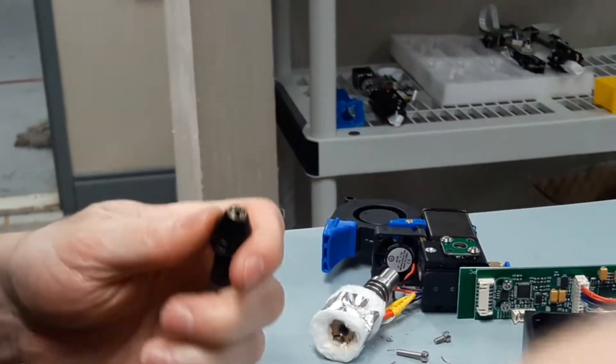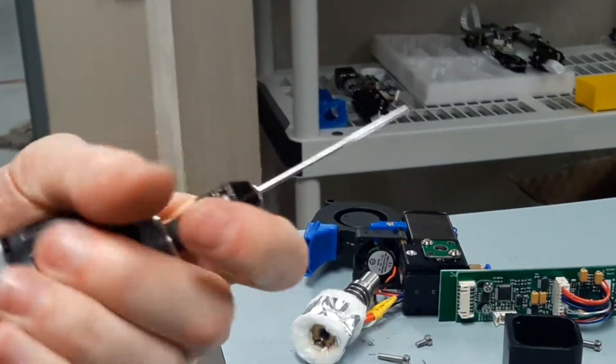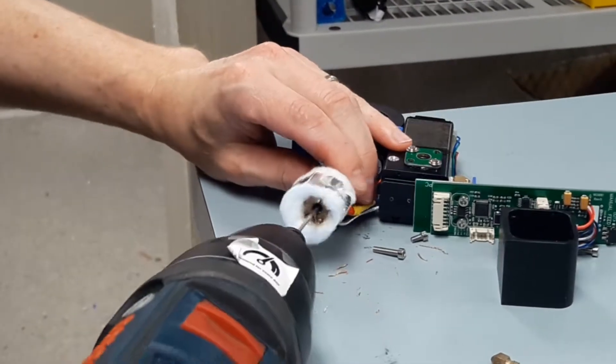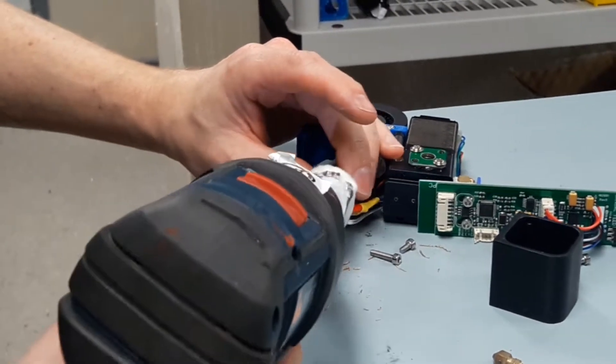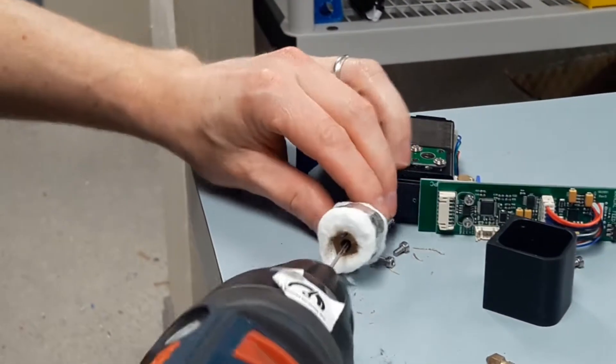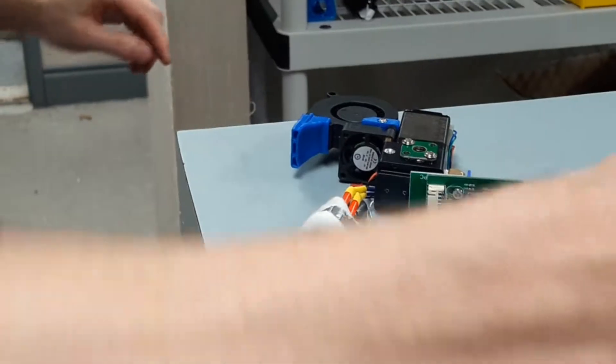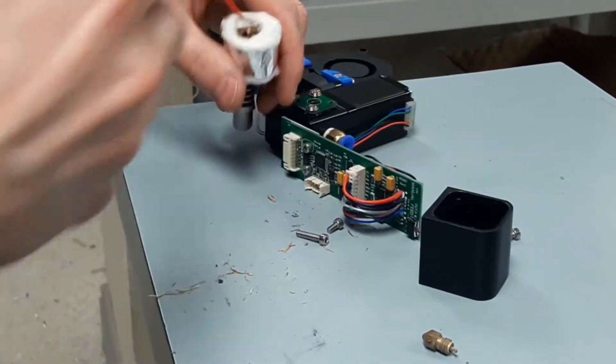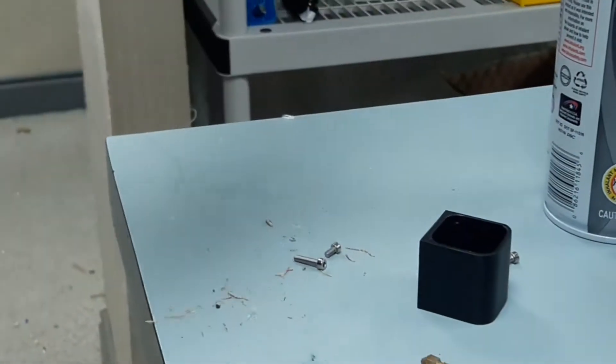I'm just going to change to the reamer. There's some residual plastic in there. All right, I'm just going to use some compressed air to blow it out. I'm going to just hold it up into the light to make sure everything looks clean and shiny in there.